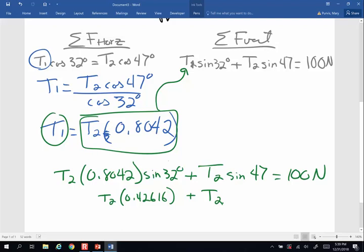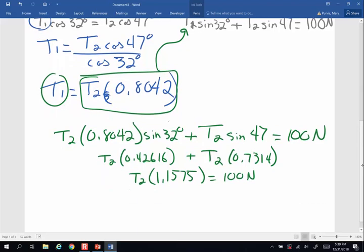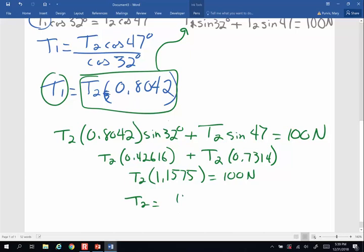And then plus T2 times the sine of 47, 47 sine is 0.7314. And if I add those two together, I'm going to end up with T2 times 1.1575 equals 100 newtons. Now I'm going to have to do a division to solve for T2. It's going to be 100 newtons divided by all of that, 1.1575. So what do I get? I get 86.4 newtons when I did this. So that is T2.